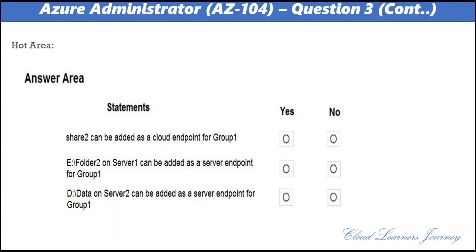For the statement 'Share two can be added as a cloud endpoint for group one,' the answer is No — a sync group contains one cloud endpoint (Azure file share) and at least one server endpoint. For 'E-folder-two on server one can be added as a server endpoint for group one,' the answer is No — Azure File Sync doesn't support more than one server endpoint from the same server in the same sync group. For 'D-data on server two can be added as a server endpoint for group one,' the answer is Yes — multiple server endpoints can exist on the same volume if their namespaces are not overlapping.